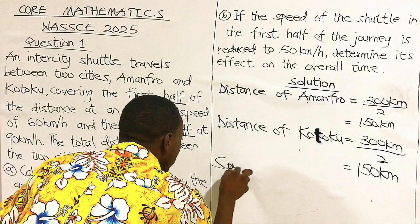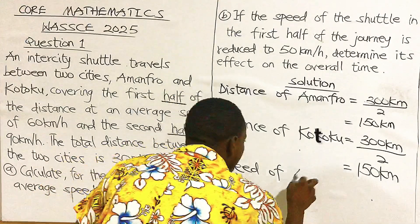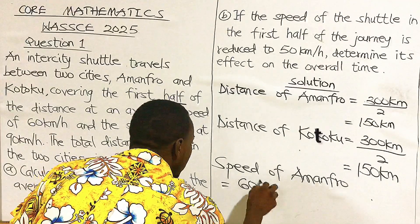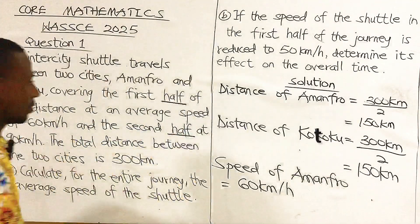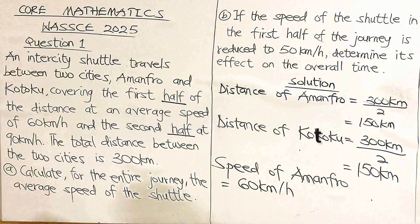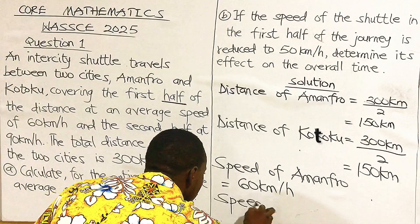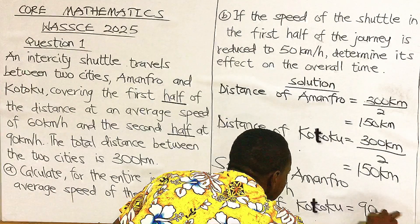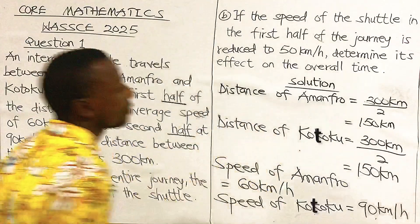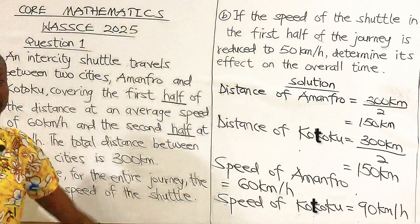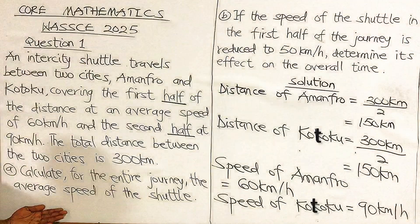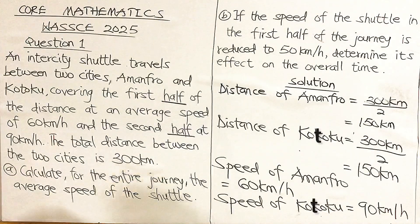We can see that each city has their respective speed. The speed of Amanfro is 60 km per hour, and the speed of Kotoku is also 90 km per hour. These will be the parameters we are going to use to find the average speed of the shuttle.